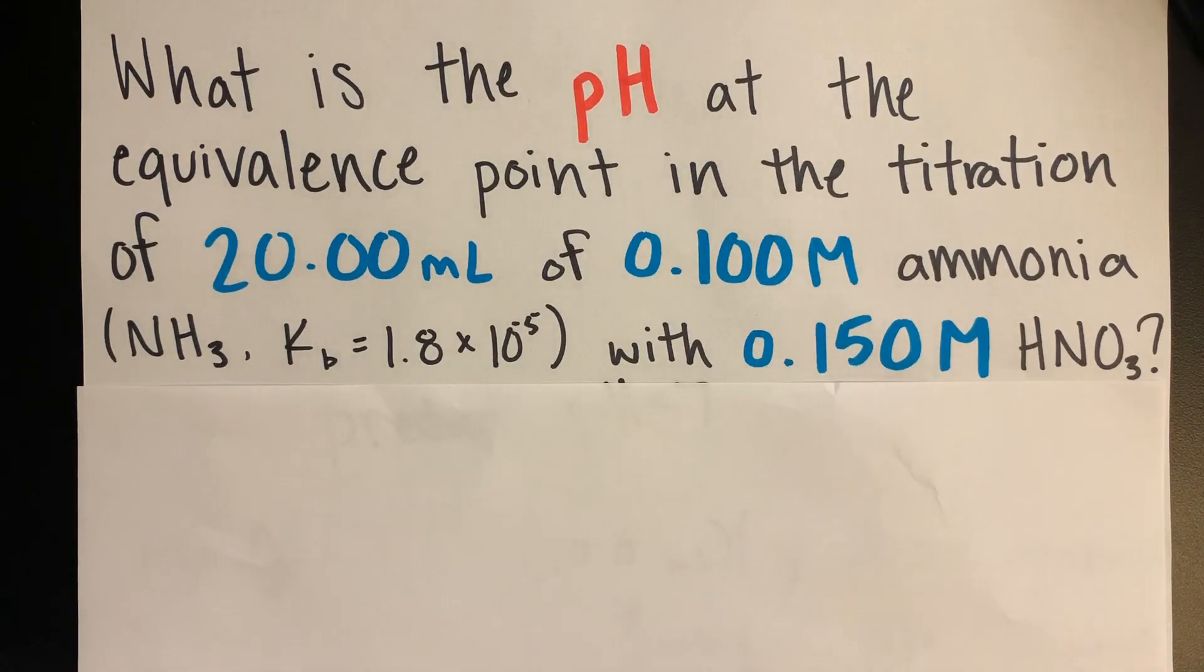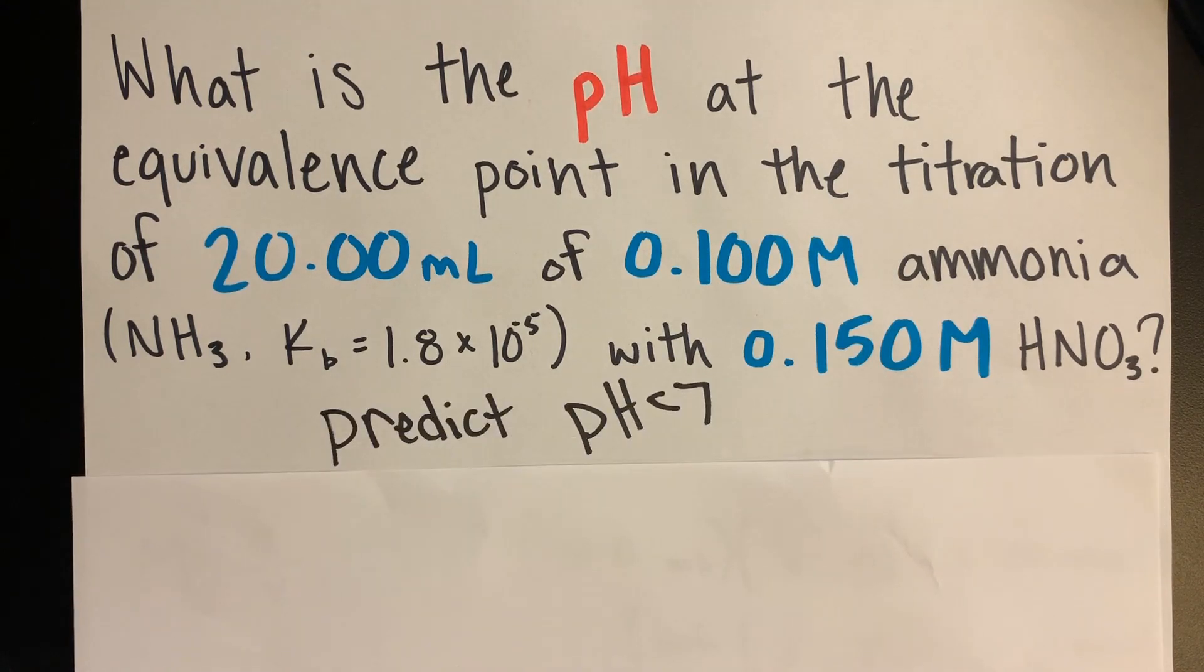Hello, today's question is over the pH at the equivalence point of a strong acid and a weak base titration. Since the titration involves a weak base and strong acid, we predict the pH to be less than 7.